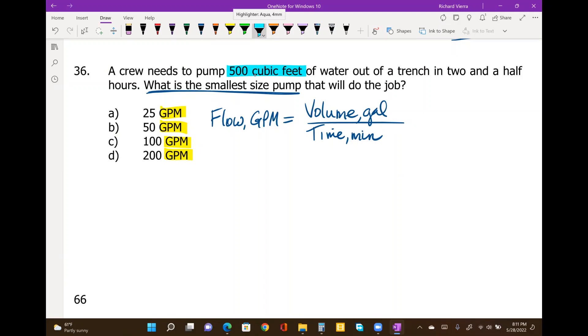by multiplying by 7.48 gallons per cubic foot. So we take that 500 cubic feet of water times 7.48 to get that number in gallons.